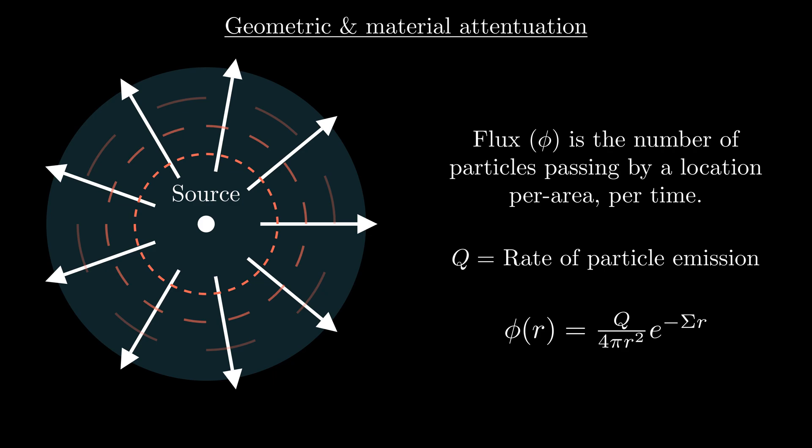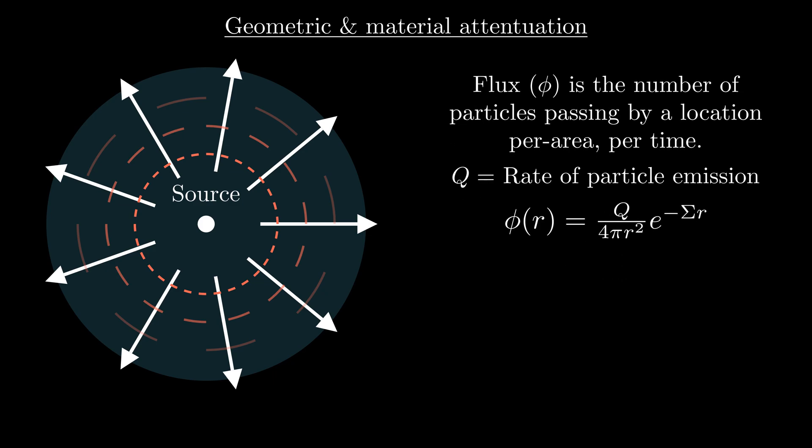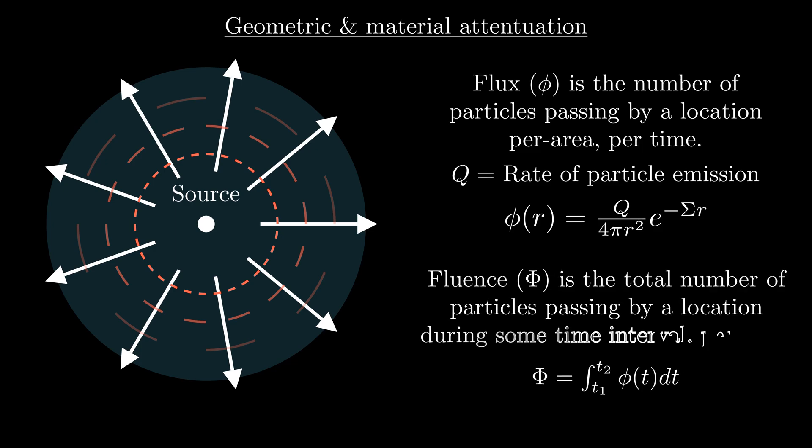By the way, if you integrate flux over some duration, you'll get the total number of particles passing by per area over that time period. This quantity is called fluence, and then if you integrate fluence over some surface, you'll get the total number of particles which hit that area during that time period. The radiation exposure sustained by a target is a function of this quantity, and this is why in radiation safety we consider the time someone spends by a source, the distance they are from that source, and the shielding between them and the source. If you want to limit your exposure to radiation, you can spend less time near a source, get further away from it, or put some shielding between you and the source.